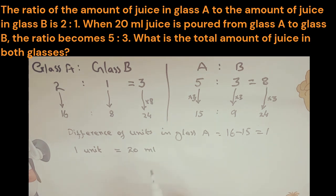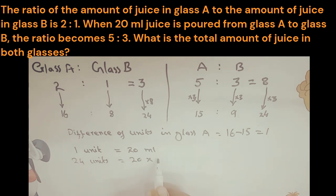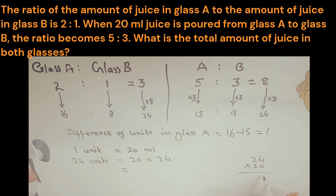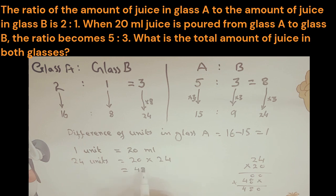The total units of juice is 24 units. Since 1 unit equals 20 ml, then 24 units will be equal to 20 multiplied by 24. Multiplying: 24 × 20 = 480. So the total amount of juice in both glasses is 480 ml.